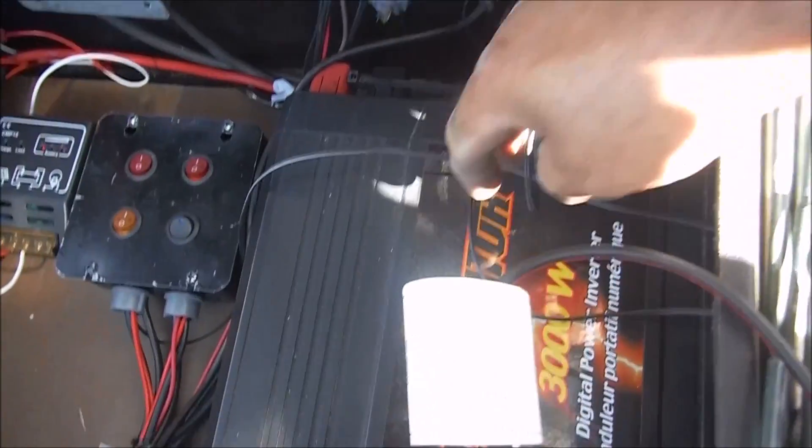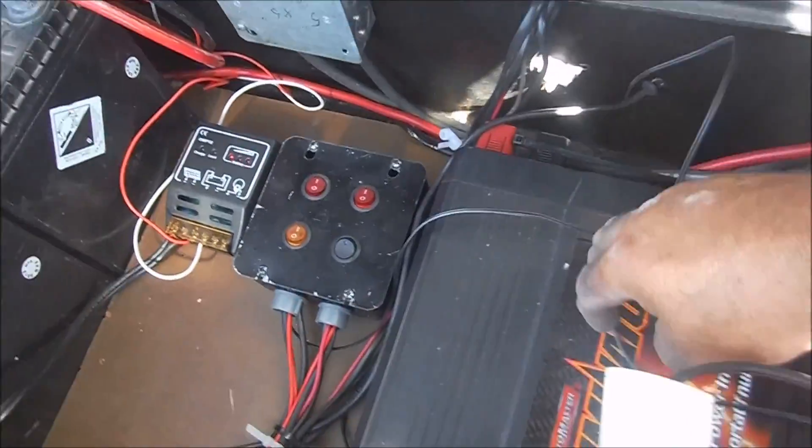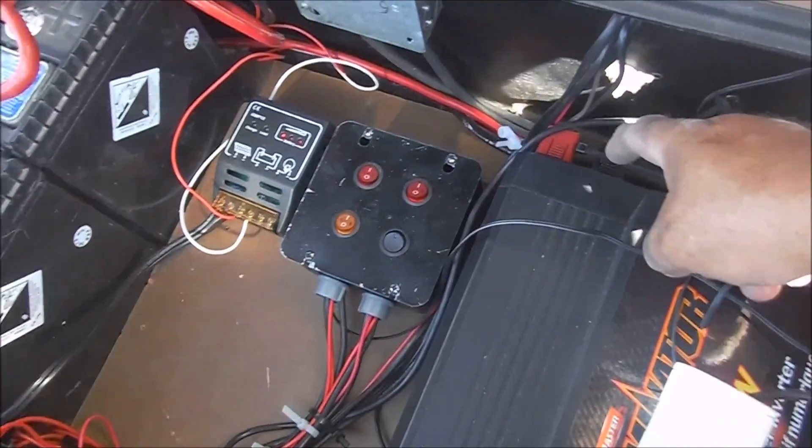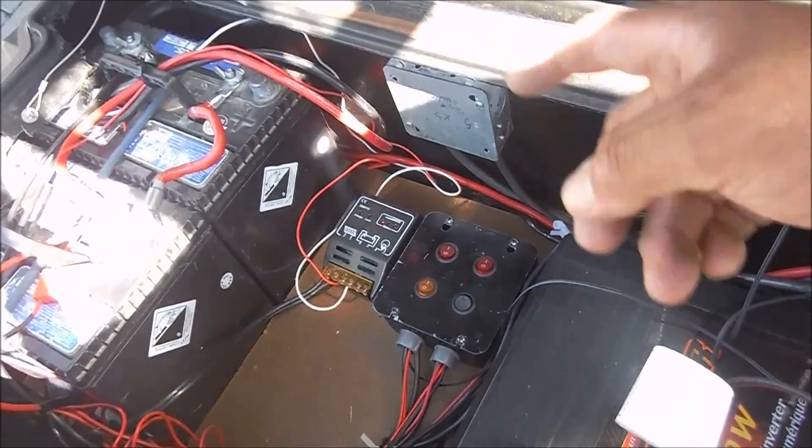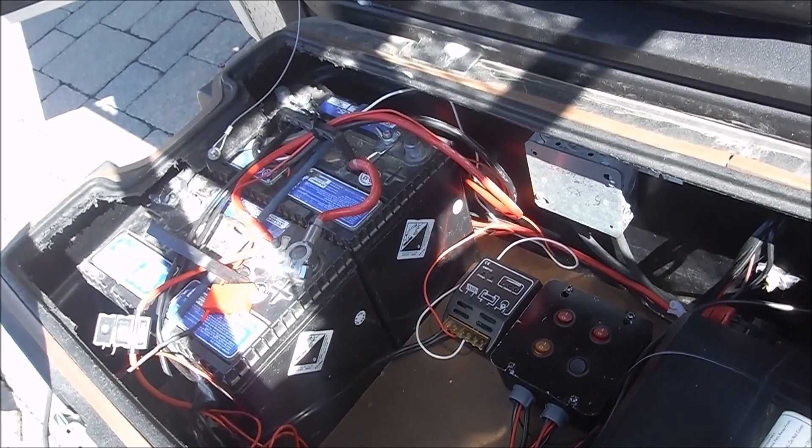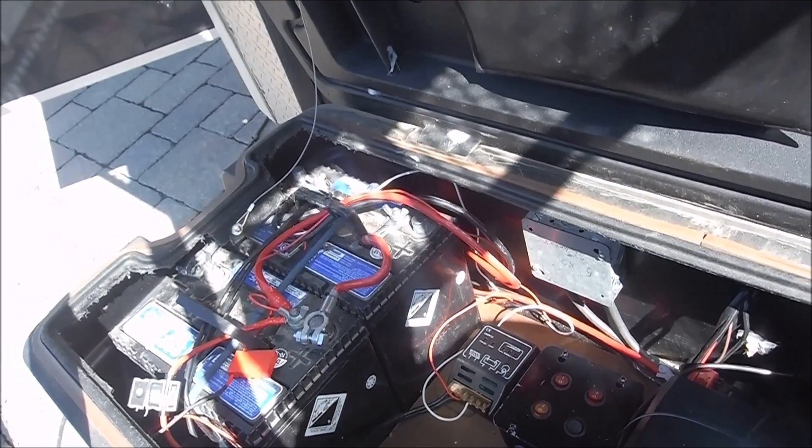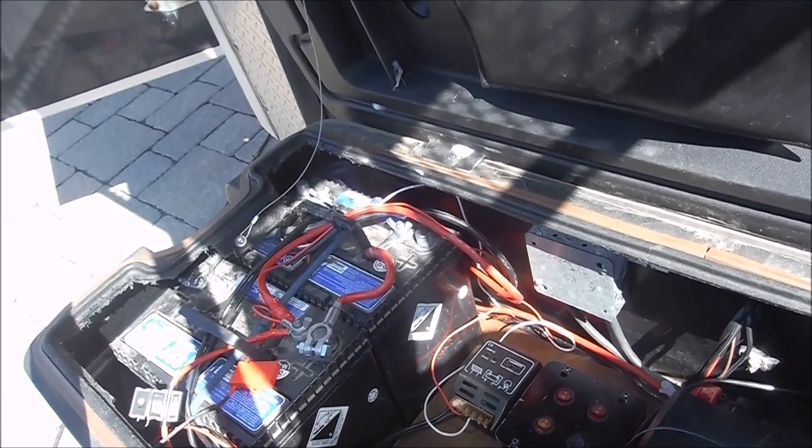This is my 3000 watt inverter, which gives me 110 inside. It works pretty good. I have no complaints. Ideally, they want you to plug in one battery there and one battery there. But what happens with that is it gets complicated with the charging system. So I decided just to use one side and it works fine for what I need it for. I basically just run the microwave once in a while or the toaster oven and it works.